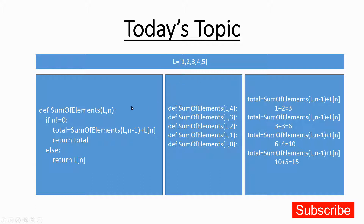Taking this example, the list has five elements. The length passed is four since the index starts from zero. This is the first call — n equals four. The condition checked is: if n is not equal to zero. Since four is not equal to zero, the condition is satisfied and the recursive statement gets executed.